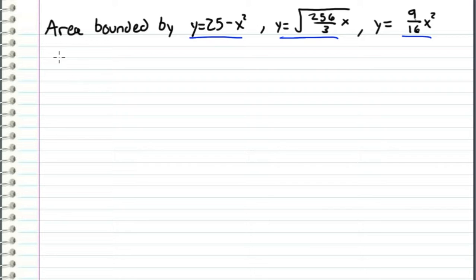Let's start with the intersection of these two parabolas. So we have 25 minus x squared equals 9 sixteenths x squared. We can solve for this pretty easily. We get 25 equals 25 over 16 x squared. These 25s cancel, so we get 16 equals x squared, which gives us x equals plus and minus 4.